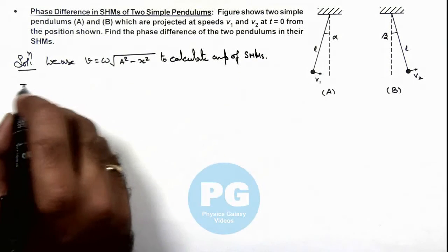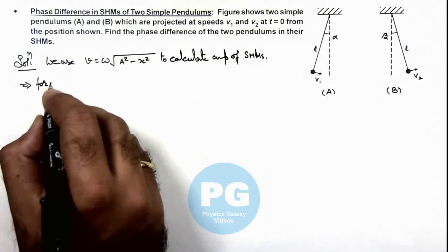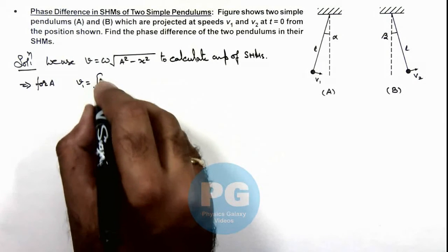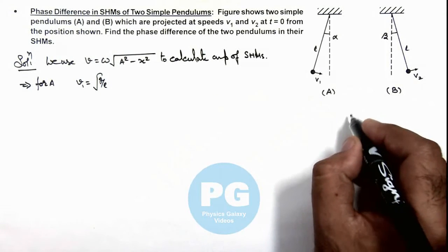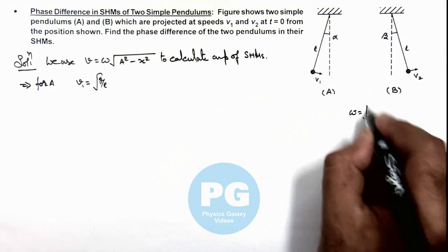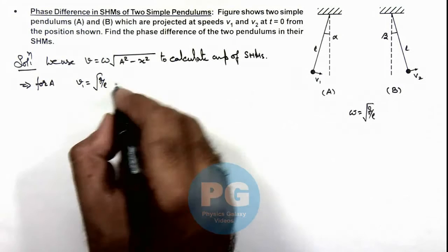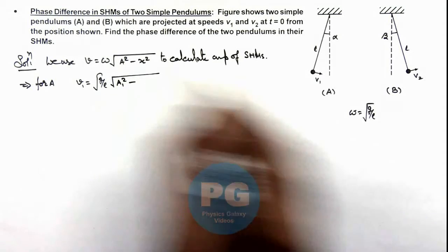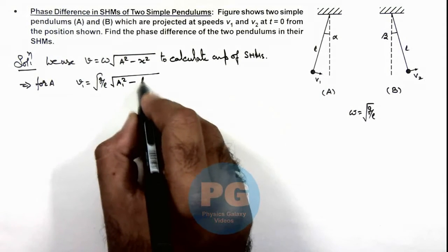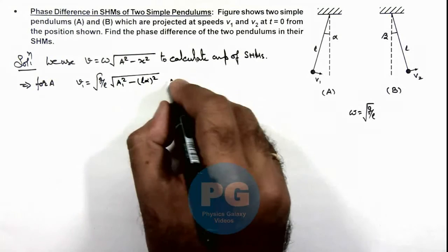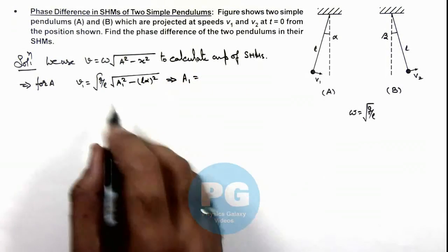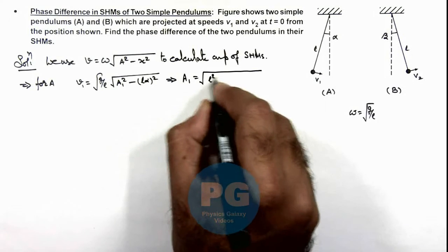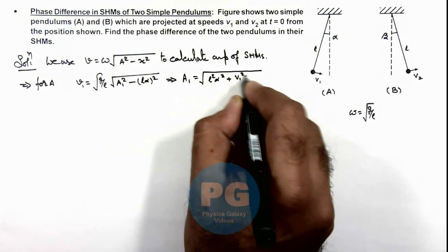So for pendulum A, we can use v₁ equals its omega, which we can write as √(g/l), as for both of these pendulums the angular frequency is √(g/l). So this √(g/l) multiplied by √(A₁² - (l·α)²), which gives us the value of A₁. On simplifying we get the amplitude of the first pendulum as A₁ = √(l²α² + v₁²l/g).